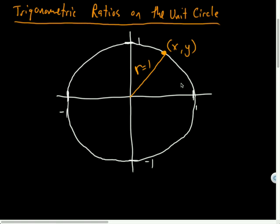Since we're talking about trigonometric ratios, the ratios of the triangle I'm going to draw will always be the same no matter how large the triangle is, because we're comparing side to side. What if I draw this triangle? I drop the height from that point down to the x-axis, and what I get is this little right triangle.